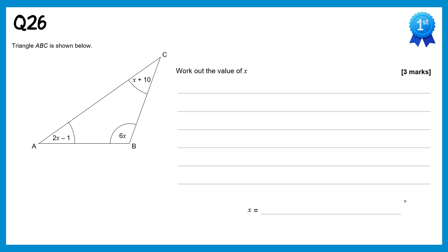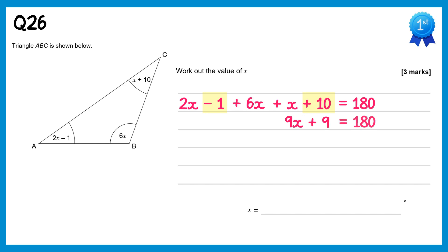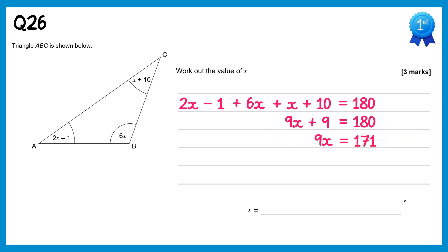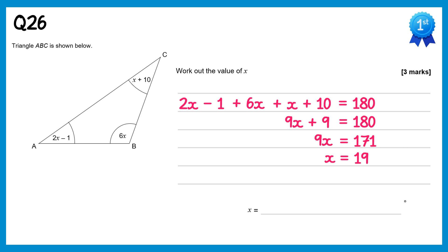For this triangle, angles add up to 180°. Adding the three angles: (2x−1) + 6x + (x+10) = 180. Collecting like terms: 9x + 9 = 180. Taking away 9 from both sides: 9x = 171. Dividing by 9: x = 19.